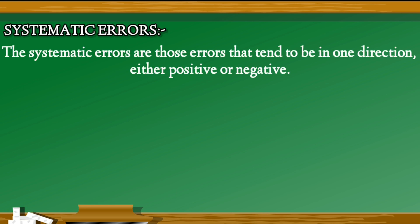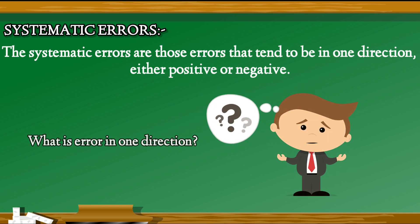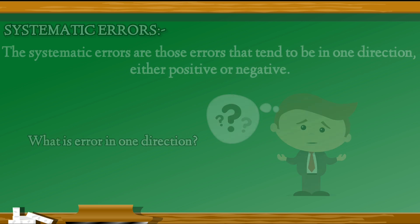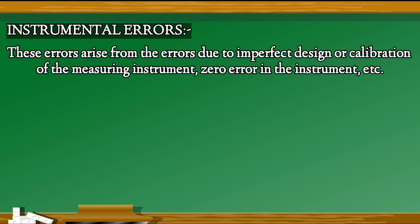Systematic errors. The systematic errors are those errors that tend to be in one direction, either positive or negative. Are you thinking about what is error in one direction? Well, you will come to know about this in coming topics. Now, the first one is instrumental errors. These errors arise from the errors due to imperfect design or calibration of the measuring instrument, zero error in the instrument, etc.